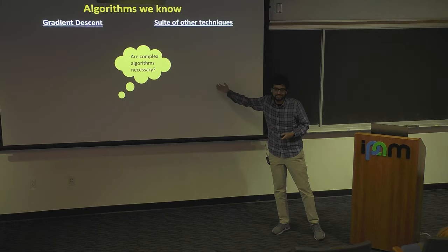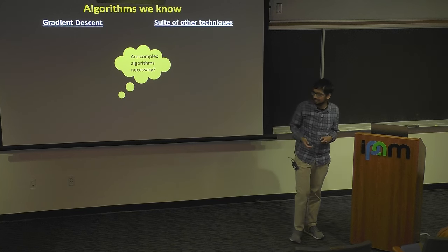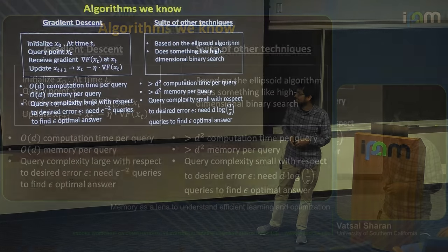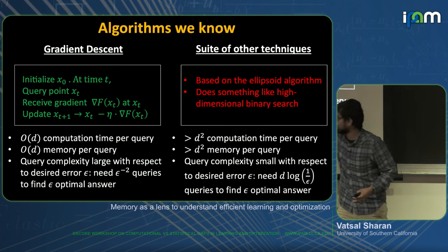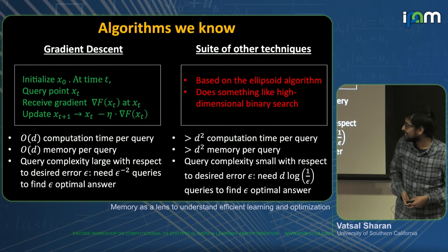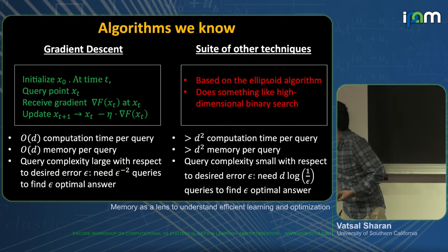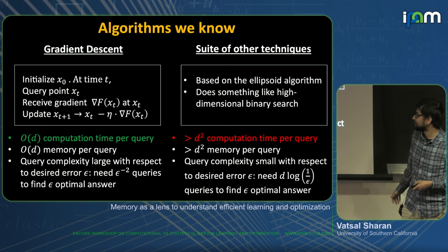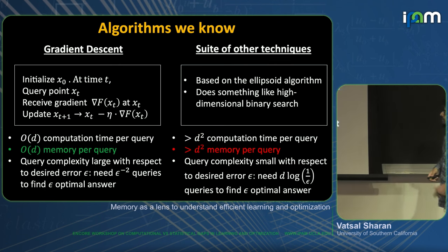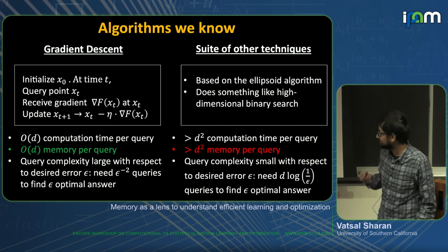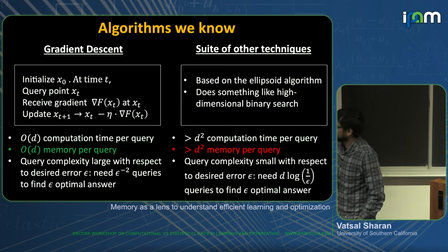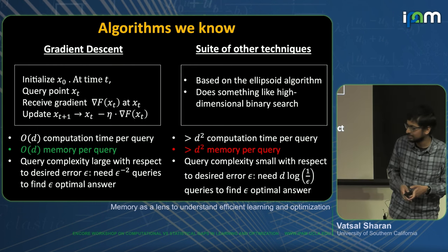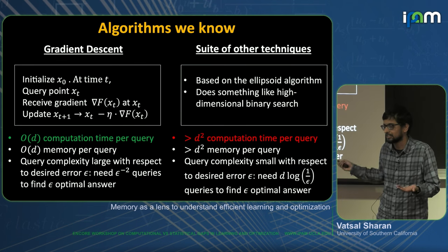A natural question is whether these complex algorithms are necessary — do you need all this complexity to get those fast rates? We could measure complexity along different axes. These memory-efficient algorithms are much simpler — describable in three lines — whereas cutting-plane methods are much more complicated, which is probably a big reason why gradient descent variants are more popular and easier to implement. They require only order-d time versus d-squared time, and order-d memory versus d-squared memory. And we'll use memory as the notion of complexity here.